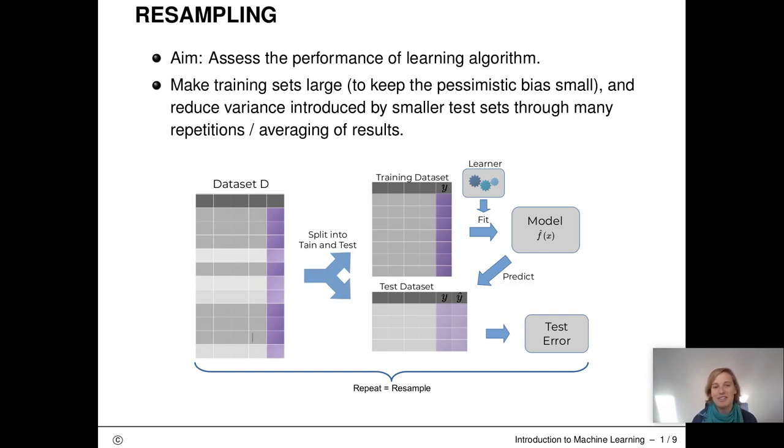The aim of resampling strategies is to assess the performance of learning algorithms in an efficient and unbiased fashion. Resampling tries to use the available data more efficiently than simple train and test splits. Instead, in resampling, we repeatedly split the data into training and test data and then average the results we get in the repetitions.